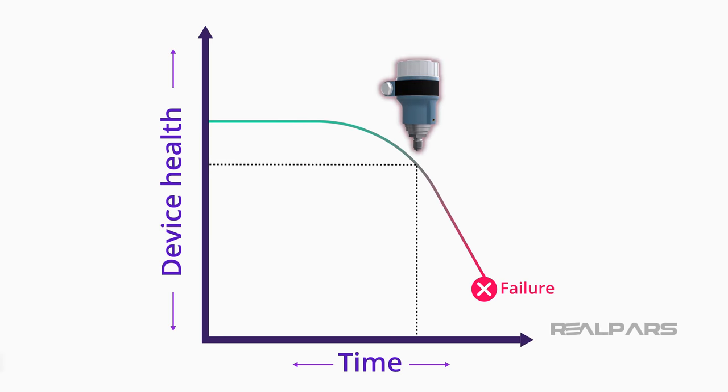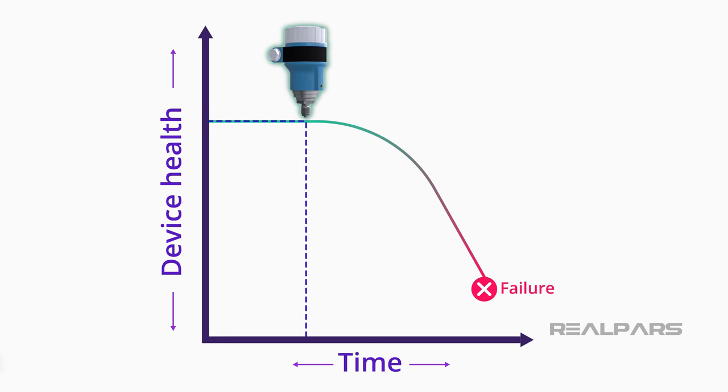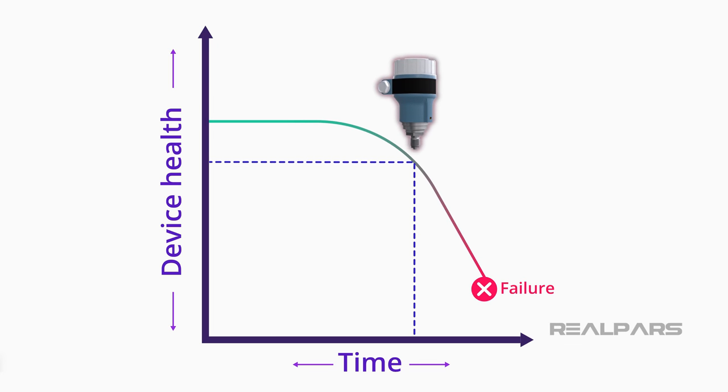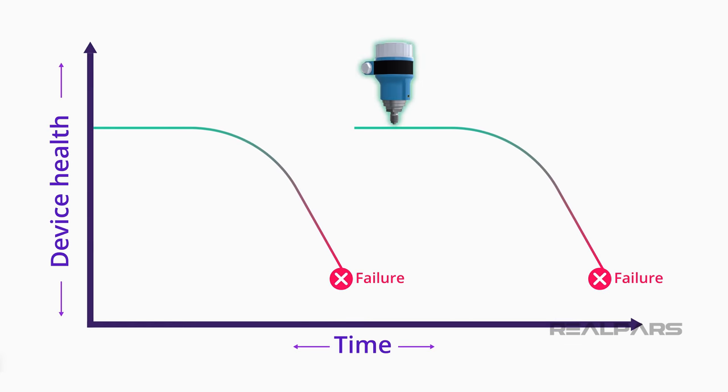Every device has a point of failure. What does that mean? Well, a new device fresh from the manufacturer is healthy and problem-free. Due to wear and tear on the device as it ages, its health slowly deteriorates and eventually it fails. At this point, you need to perform maintenance for the device to get it back to a healthy condition.